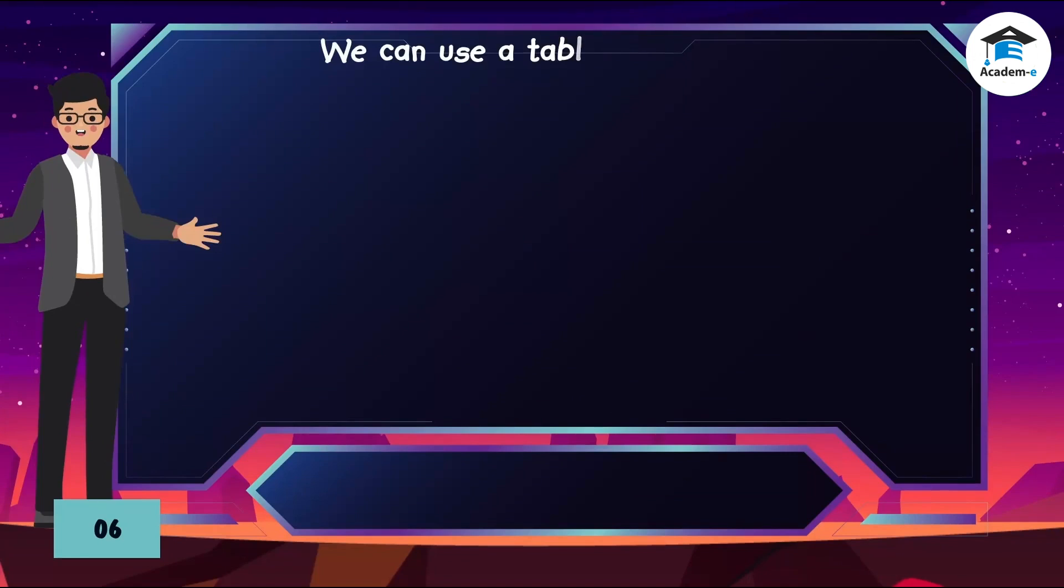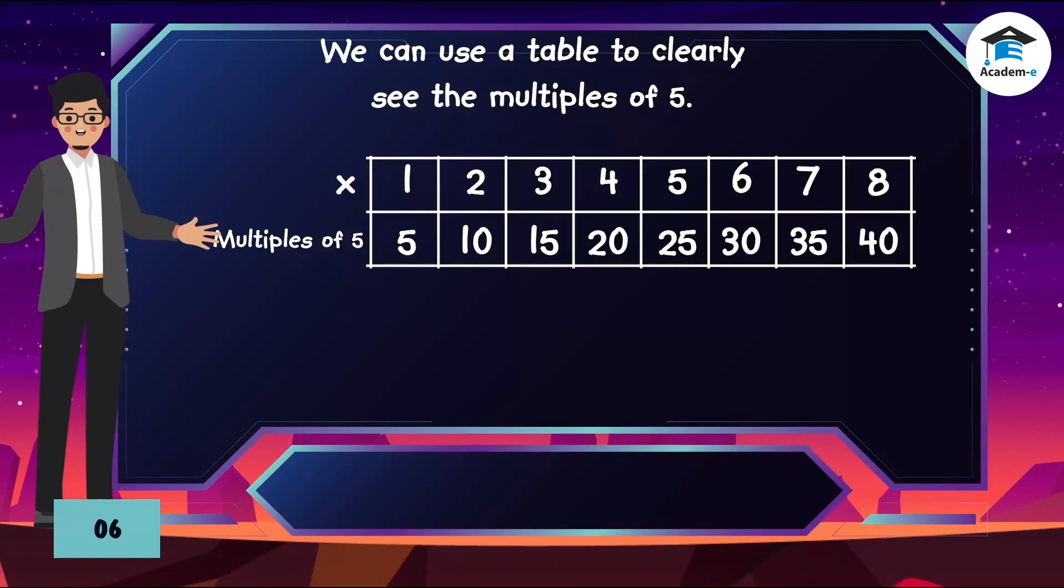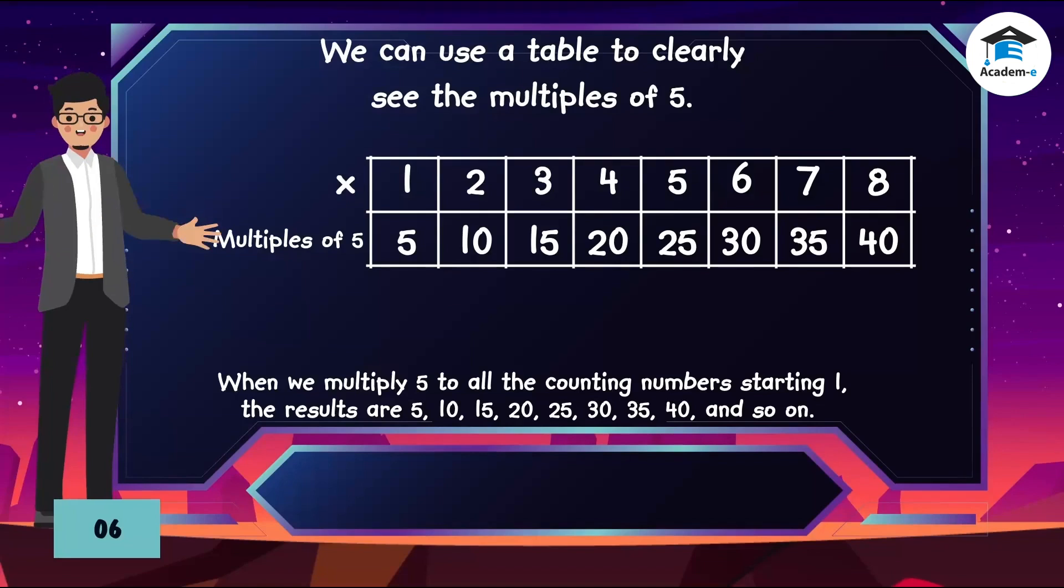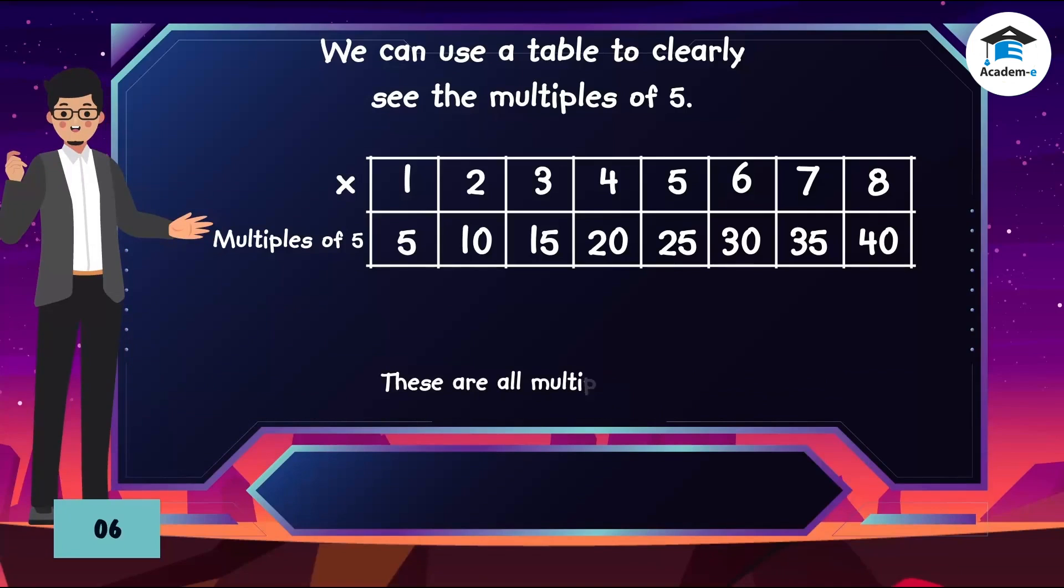We can use a table to clearly see the multiples of 5. When we multiply 5 to all the counting numbers starting 1, the results are 5, 10, 15, 20, 25, 30, 35, 40, and so on. These are all multiples of 5.